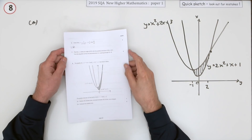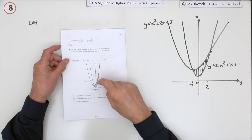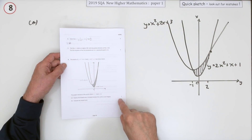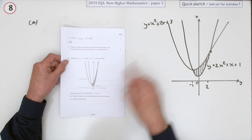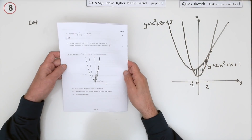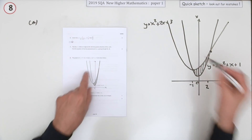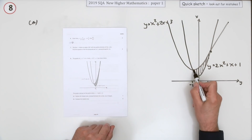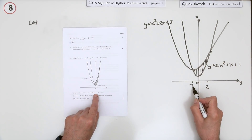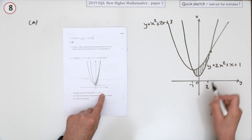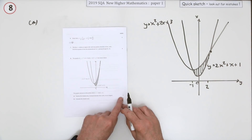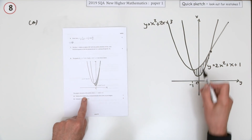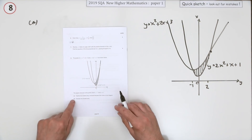Number eight from the 2019 Higher Maths Paper 1 — area between two curves. Normally a big question, but only four marks here, and at least they're just quadratics. You're given these two curves and their equations, and you're also told that they intersect when x is negative one and when x is two. The first part is to find an expression for the shaded area between the two curves.